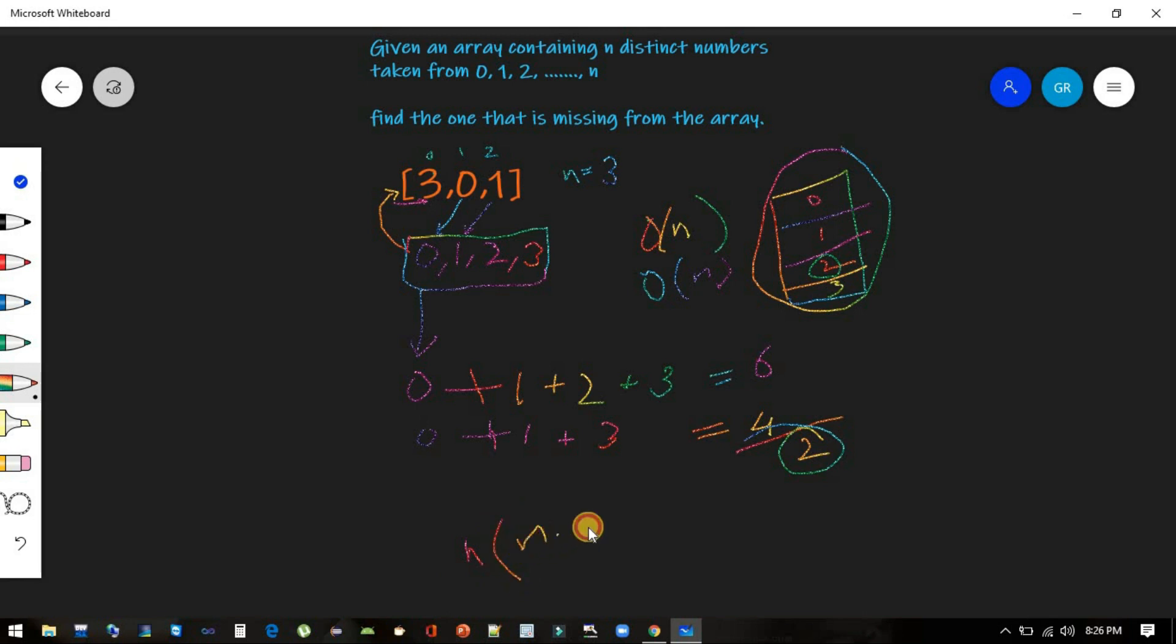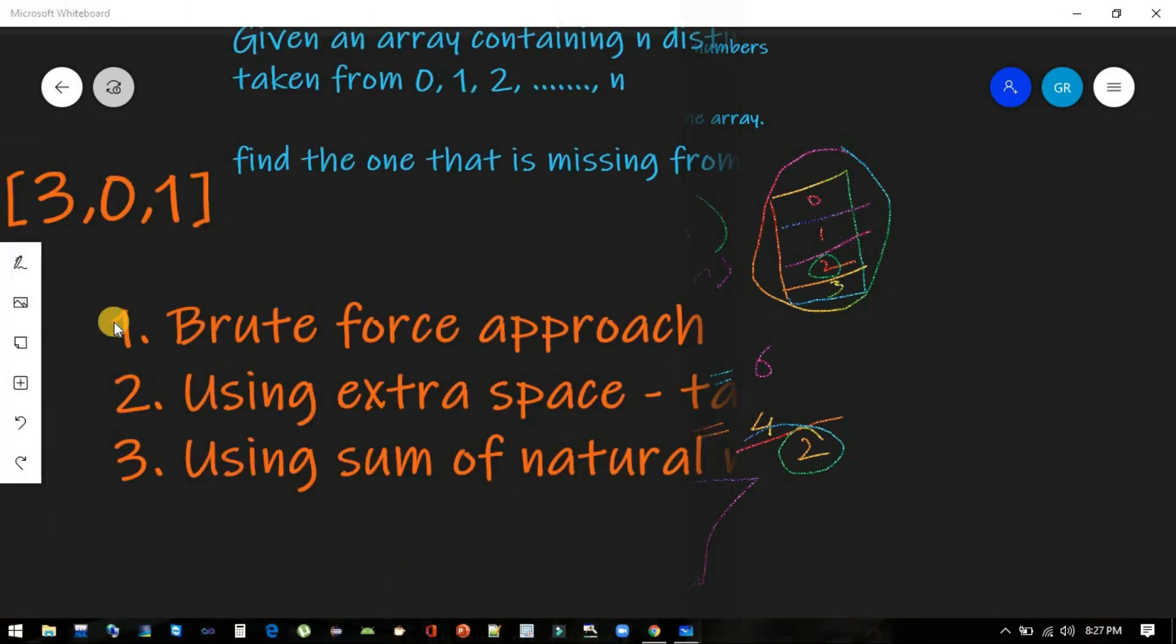Whatever n is given to us, if we try to do n into (n plus 1) by 2, this is the sum of n natural numbers. And we just do the sum of whatever input array is given to us, sum_n minus sum will be our answer.